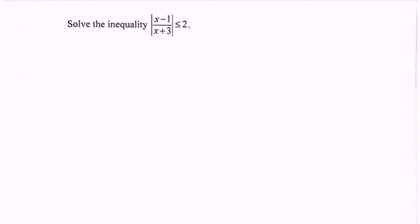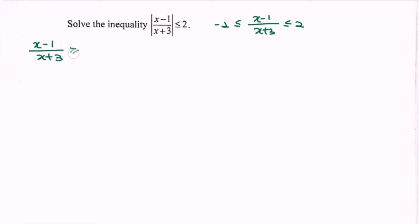My suggestion is to use the definition. So by using the definition we have the situation for n, where we have x minus 1 over x plus 3 is in between negative 2 and 2, where negative 2 and 2 are included. So we split the situation: x minus 1 over x plus 3 greater than or equals to negative 2, and x minus 1 over x plus 3 less than or equals to 2.